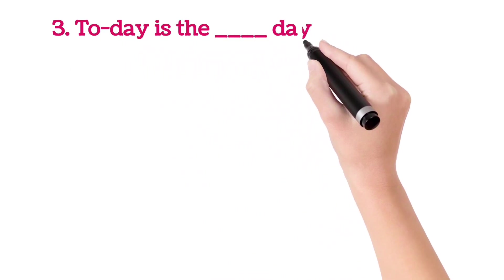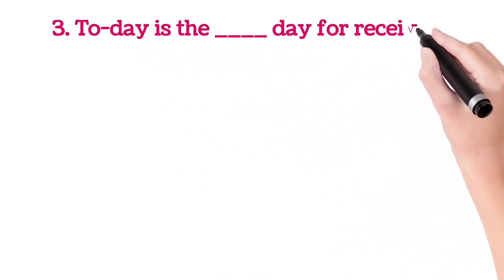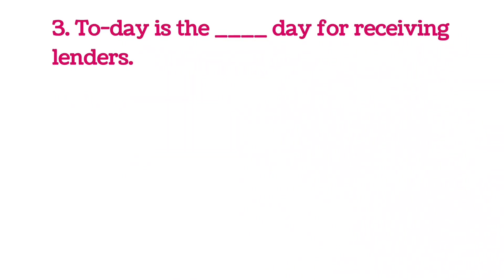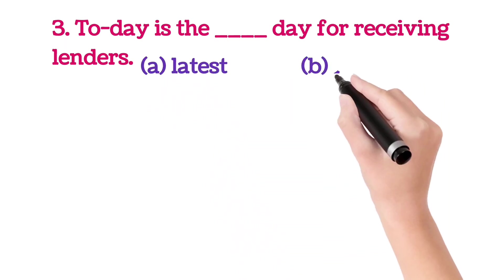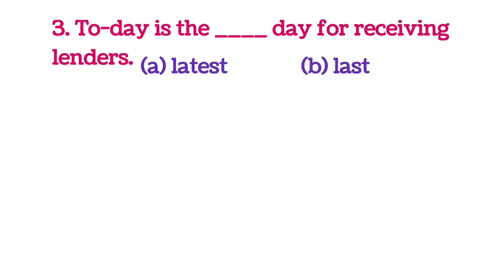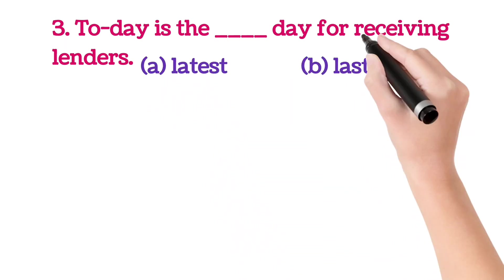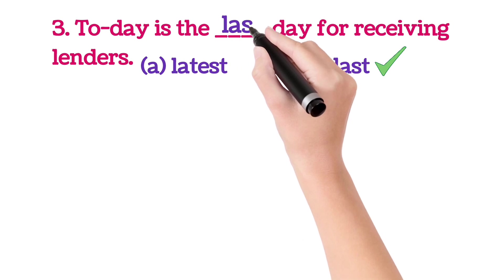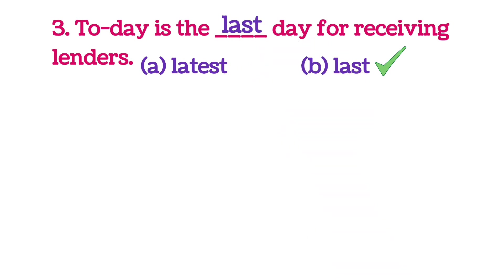'Today is the ___ day for receiving tenders.' A: latest, B: last. B is correct. Today is the last day for receiving tenders.